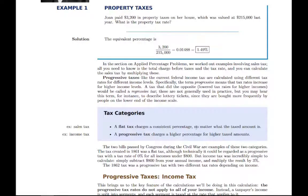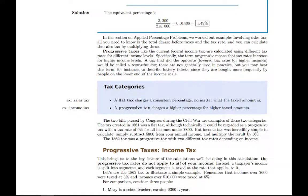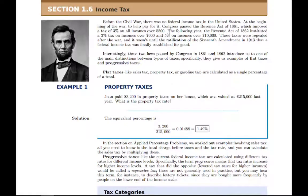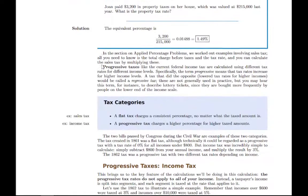A flat tax is just a consistent percentage — no matter what amount you're taxing, you just take a percentage of that and you're done. A progressive tax divides up the amount you're taxing into brackets and charges different percentages, usually higher percentages for higher amounts. That's the term progressive — it gives the idea of higher tax percentages for higher values. A regressive tax is the opposite, where you charge lower percentages for higher values, so higher incomes would actually pay lower taxes.